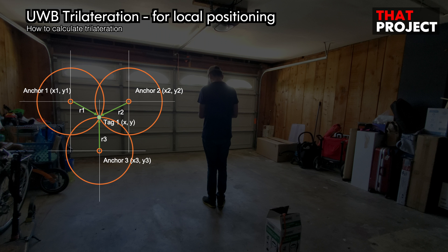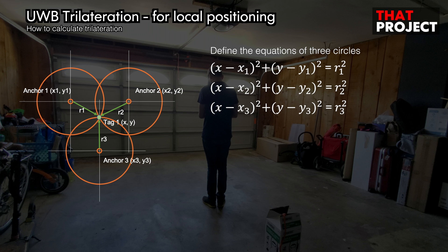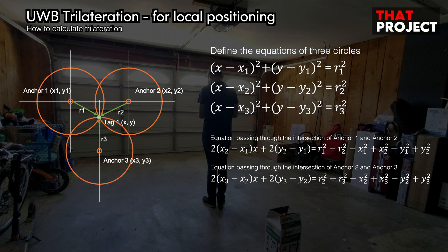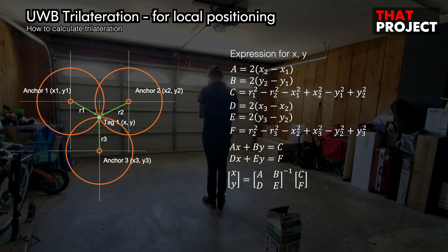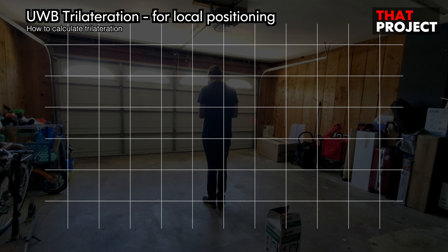Now let's look at the equation. The equation of a circle with radius r1, r2, and r3 for each anchor is as follows. Let's combine the two equations of a circle to find the equation that passes through the intersection of the two circles. The equation that passes through the intersection of anchor 1 and anchor 2 is as follows. Since the expression becomes complicated in the subsequent calculations, I will replace each term with an alphabet. The unknown x and y that we need to find refer to the x and y coordinates of the tag. The tag's coordinates can be obtained by combining the two equations above.